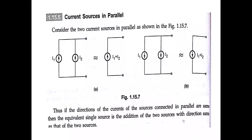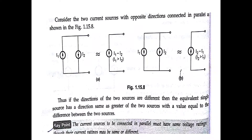For current sources in parallel, see figures A and B: if I1 and I2 are both in the upward direction, the equivalent is I1 plus I2. In the second diagram, if I1 and I2 are both downward, the equivalent is also I1 plus I2. Thus, if the directions of current sources connected in parallel are the same, the equivalent single source is the addition of the two sources, with the direction the same as that of the two sources.